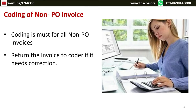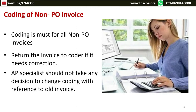Return the invoice to the coder if it needs correction. If the coding details are not matching in the system, refer to the established process or policy. The AP specialist will return the invoice to the person who supplied the invoice coding. Note that any rework will delay invoice processing, leading to business and discount impact. Some companies allow a general practice of referring to old invoices of the same vendor and using that coding to process the invoice — this can save time, but there is a risk. AP specialists should not use a different code unless approved by the authority.